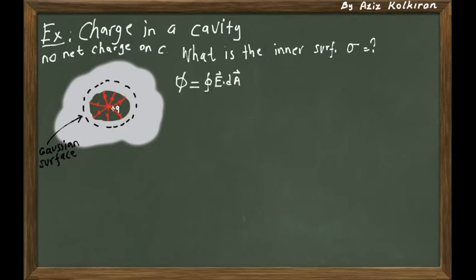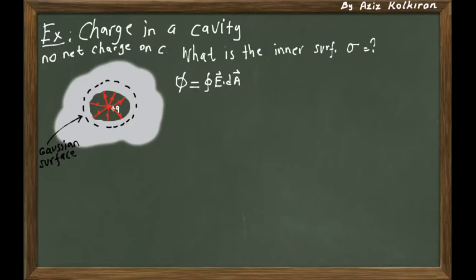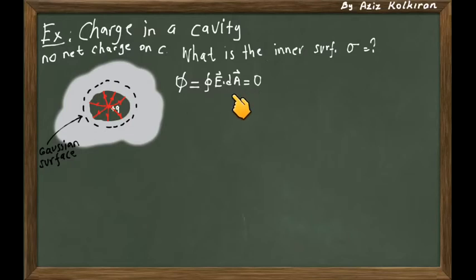Applying Gauss's law, we first think about the electric flux through this Gaussian surface. Whether they are charged or neutral, for all conductors the electric field inside the conductor is equal to zero. So if there is no electric field crossing this imaginary Gaussian surface, the flux is of course zero. There is no electric field; the electric field is zero inside the conductor. So the flux through this Gaussian surface must be zero, and we can write that integral over this surface equals zero.